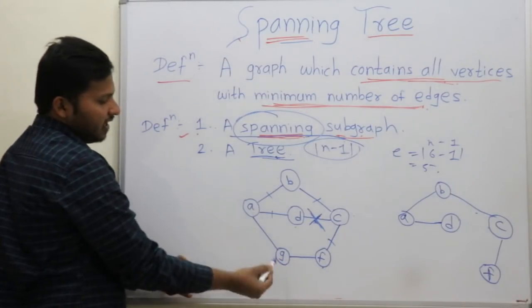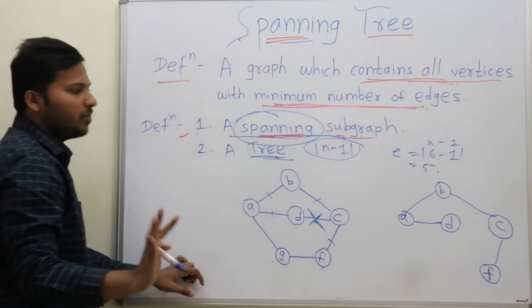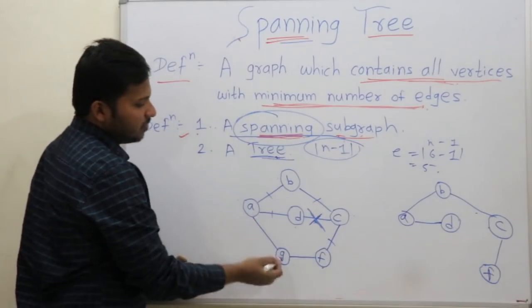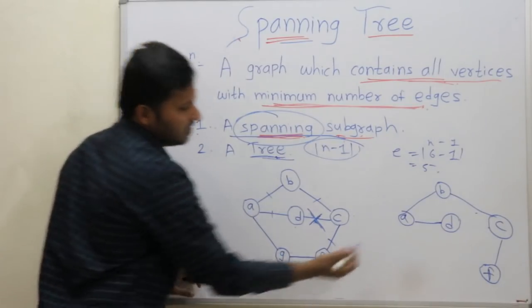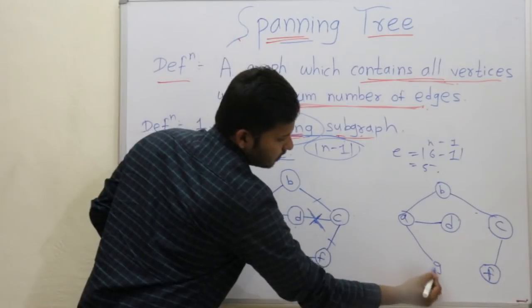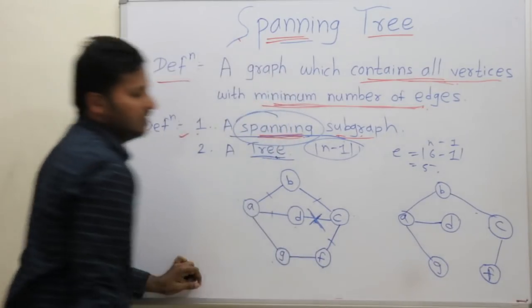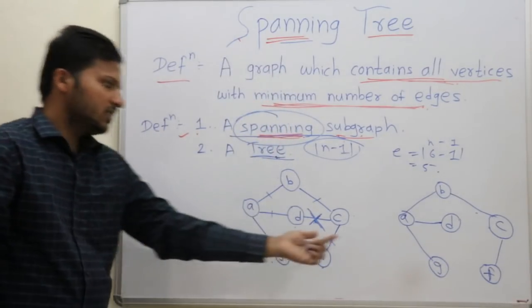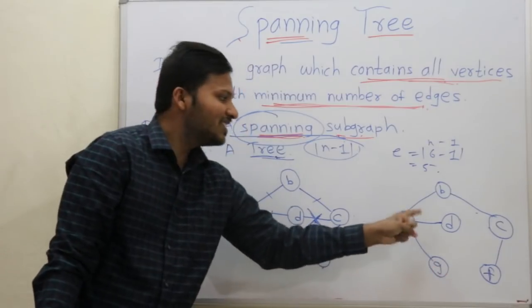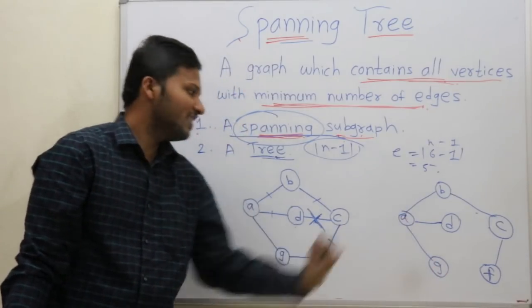Either F, G or A, G — both don't form a cycle. So I may take A, G. This is one spanning tree formed here.